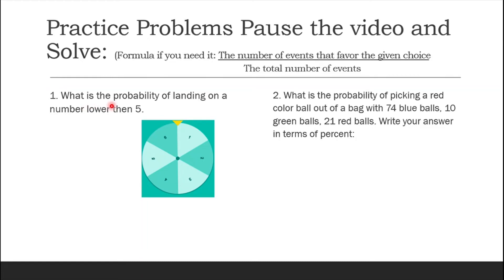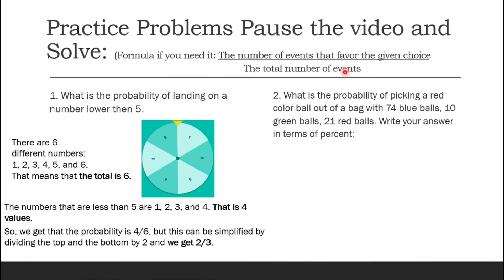Number 1. What is the probability of landing on a number lower than 5? There are 6 different numbers: 1, 2, 3, 4, 5, and 6 and that means the total is 6 so it will be the denominator. The numbers that are less than 5 are 1, 2, 3, and 4. That is 4 values or 4 events that favor the given choice. So we get the probability is 4 out of 6 but this can be simplified by dividing the top and bottom by 2 and we get 2 over 3 as the answer.